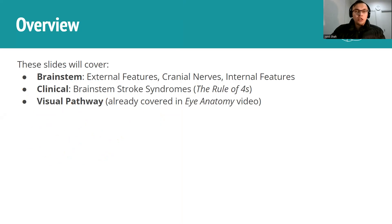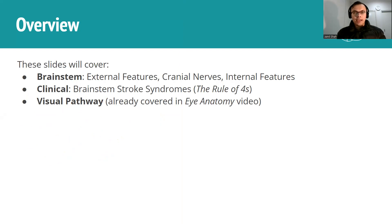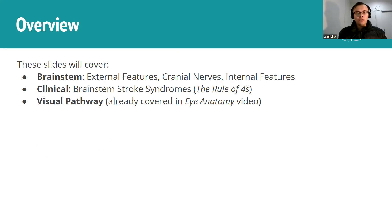The content we're going to be covering today is the external structure of the brainstem, sort of like surface anatomy if we're going to look at a specimen of it. We'll also talk about the cranial nerves, how they emerge from the brainstem and how they originate within the brainstem with the nuclei. The main thing clinically is brainstem stroke syndrome - understanding how stroking different parts of the brainstem affects the different cranial nerve nuclei and also other tracks.